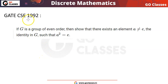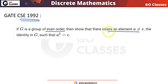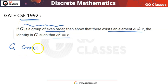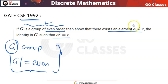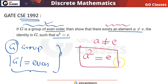Hi everyone, welcome to Go Classes. Let's solve this question - this is a GATE 1992 question. The question is saying that if G is a group of even order, then show that there exists an element other than the identity element such that a squared is equal to e. So the question is very simple - if G is a group of even order, meaning the number of elements in G is even, then we have to prove that other than identity, there exists at least one element a such that a² = e.